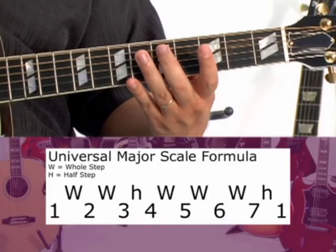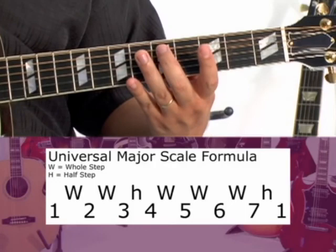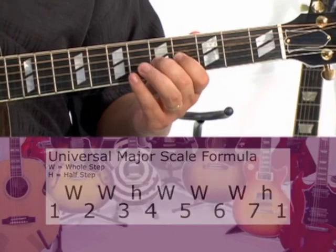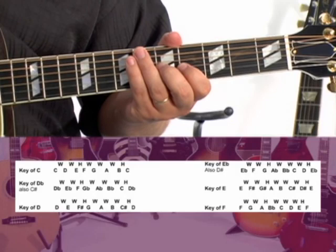Now the formula for a major scale from the root is: whole step, whole step, half step, whole step, whole step, whole step, and half step. The examples below show each key of the musical alphabet. Notice they all have the same major scale formula: whole, whole, half, whole, whole, whole, half.